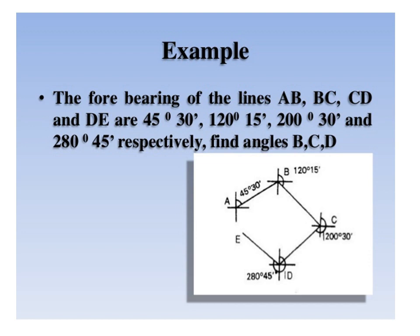While preparing a sketch, first of all you are supposed to select point A. Through point A you are supposed to show the cardinal directions, since the bearing is the horizontal angle between the north and the line. Since the fore bearing of line AB is 45 degrees 30 minutes, from reference north you show the angle of 45 degrees and draw a line towards point B. At point B again you show the reference north and the quadrant, and consider the fore bearing of line BC, which is 120 degrees 15 minutes. Since that line lies in the second quadrant, you draw a line from B to C.